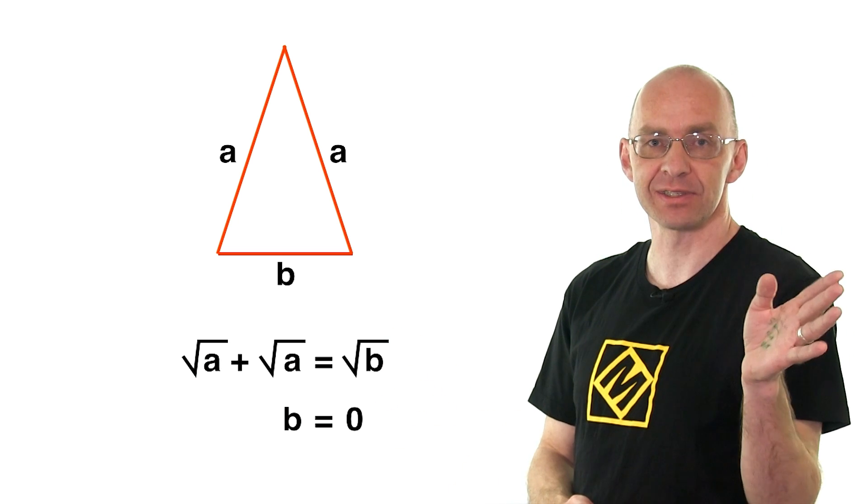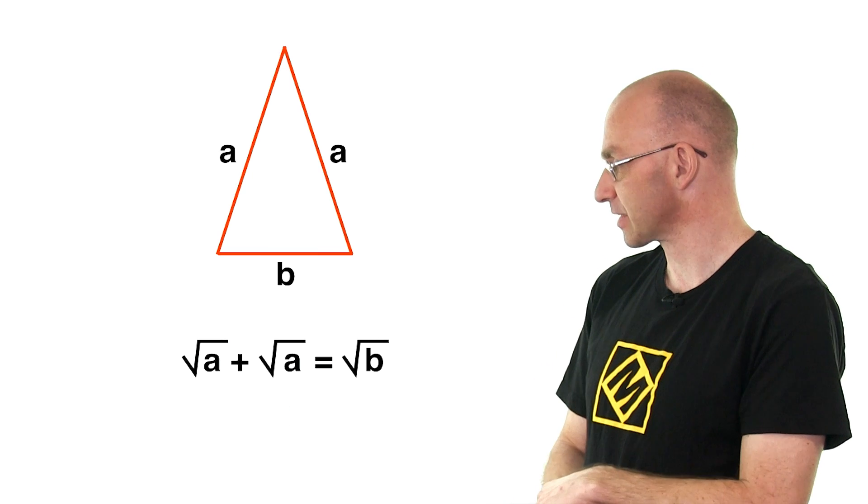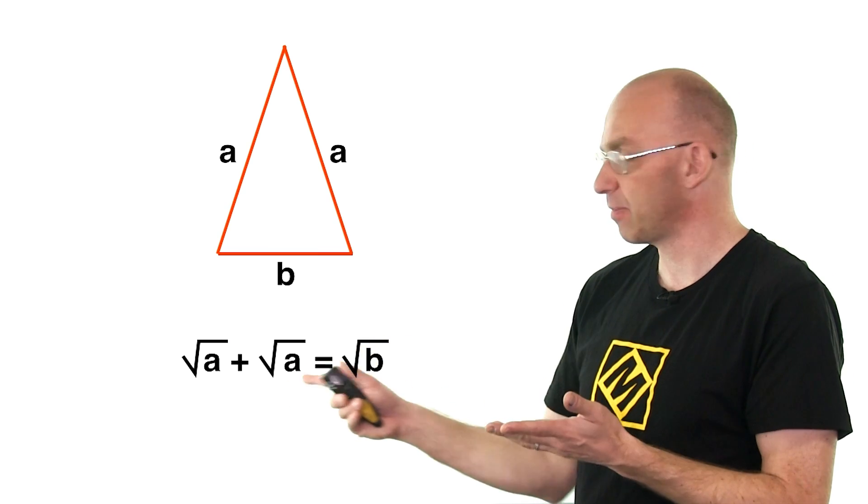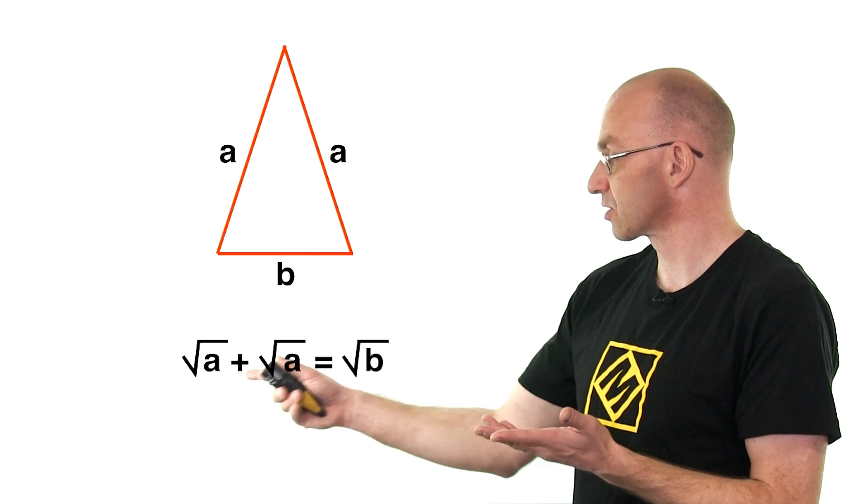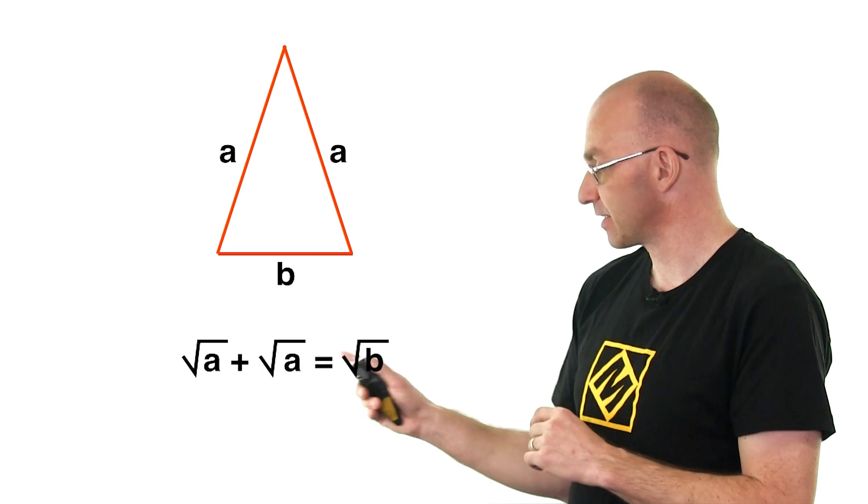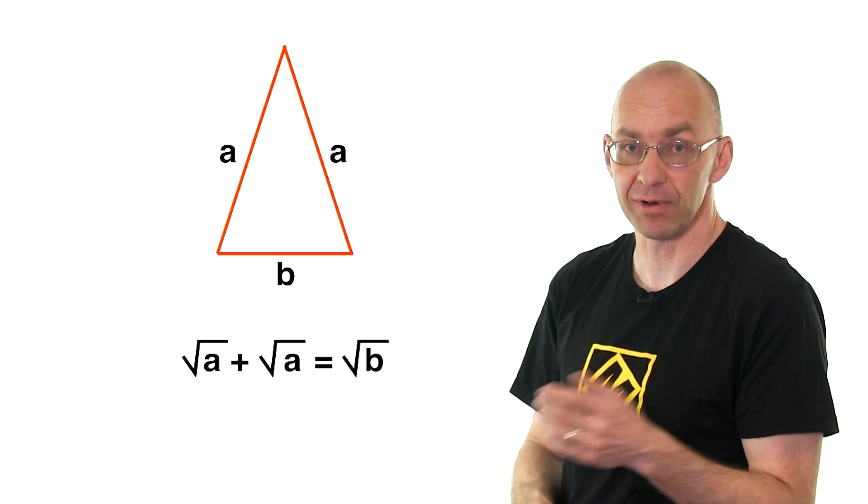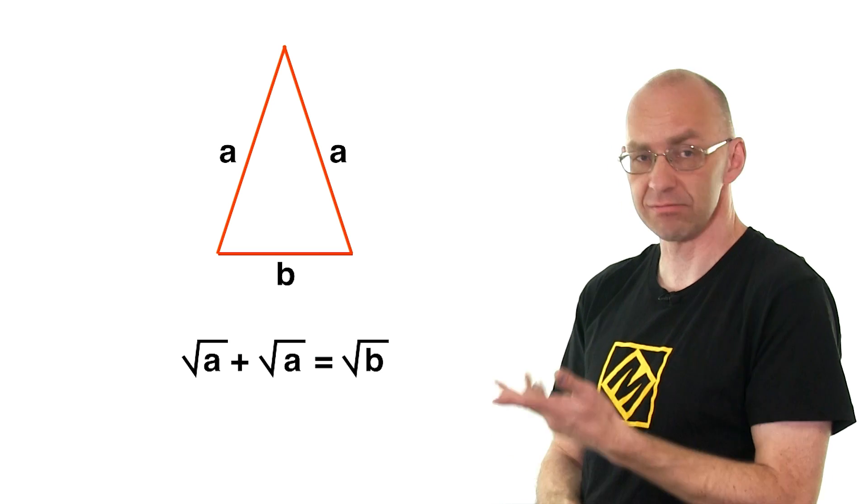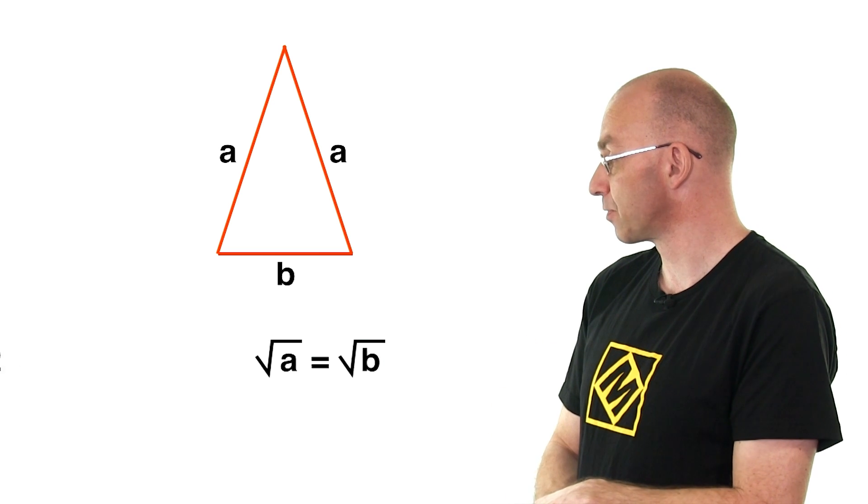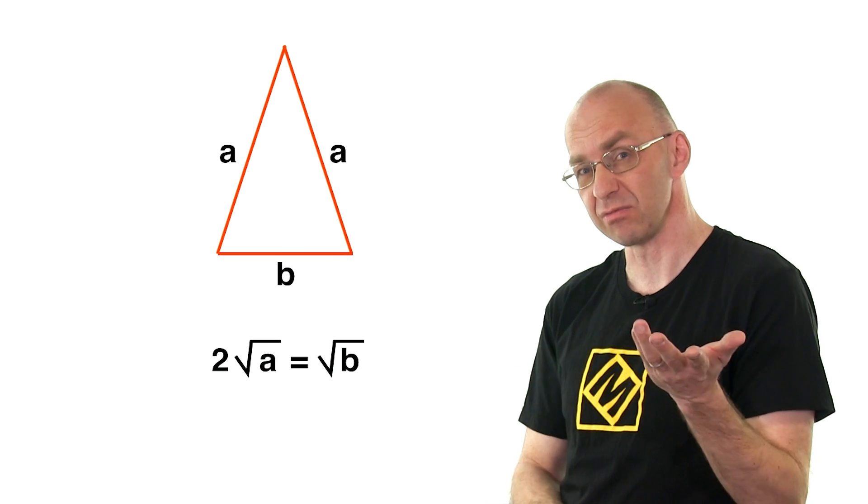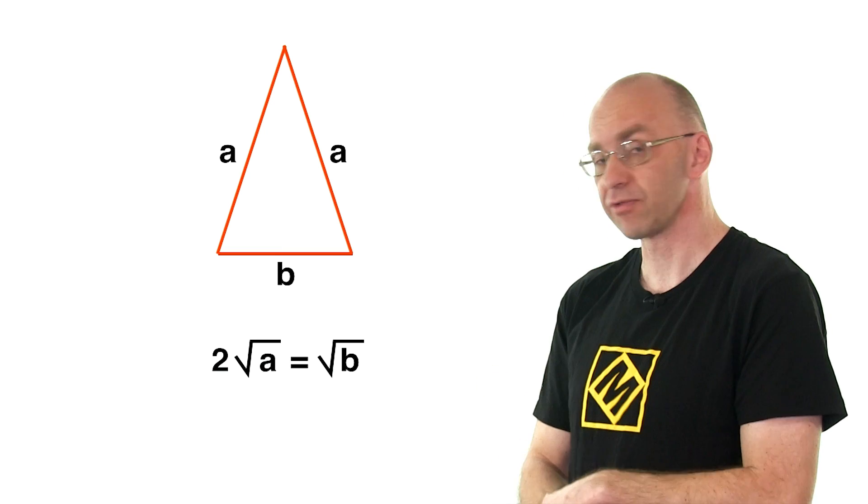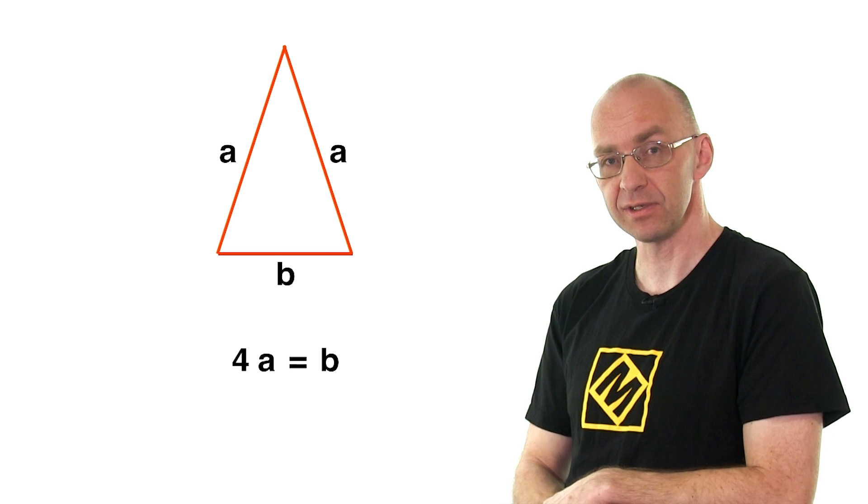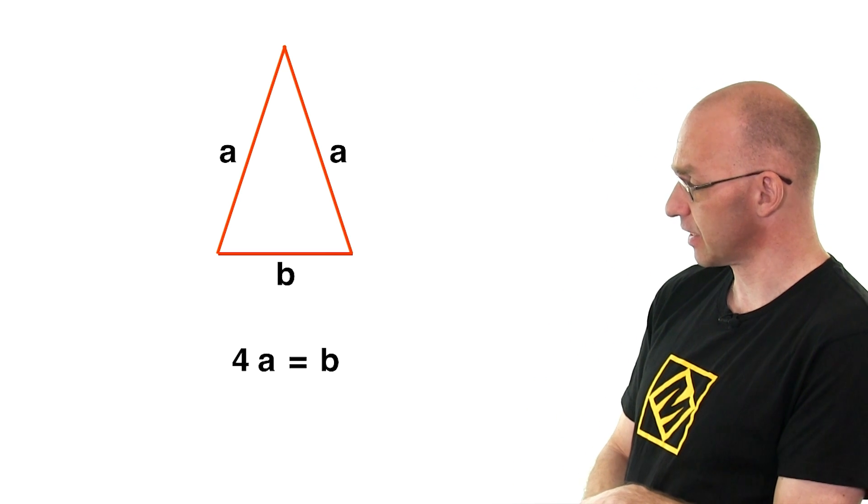But let's just forget about this any two sides business. Maybe just this was meant, right? Square root of A plus square root of A is equal to square root of B. Let's have a look. So what we do is we pull those two things together. So it's two times square root of A. What do we do now? Pretty obvious. We square to get rid of the square roots. So we've got this one here. And now we'll have a really close look at it.